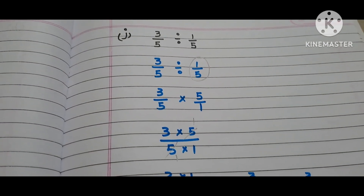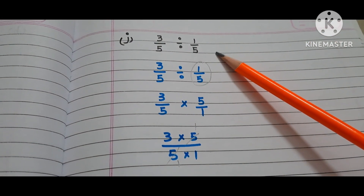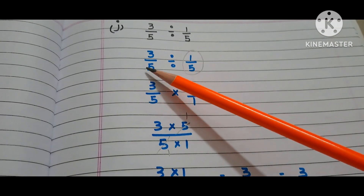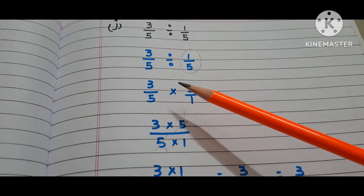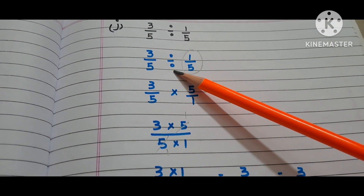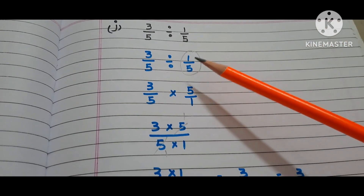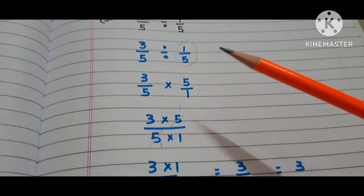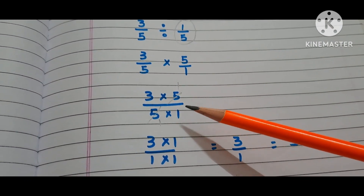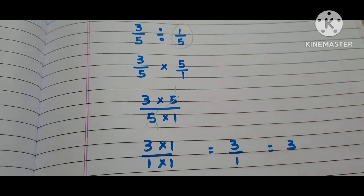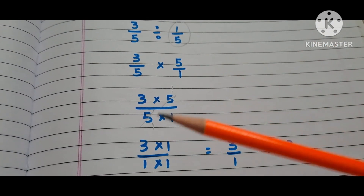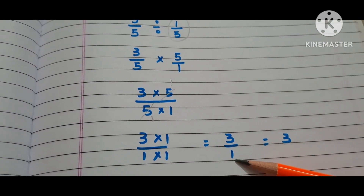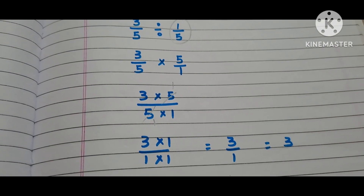Now let us move to the J bit. The question is 3/5 divided by 1/5. Copy down the first fraction 3/5. Write the multiplication symbol instead of the division symbol and take the reciprocal of 1/5, which is 5/1. We have 3 times 5 by 5 times 1. Here, 5 and 5 get cancelled. Now we have 3 times 1 by 1 times 1, that is 3/1, which equals 3. The answer is 3.